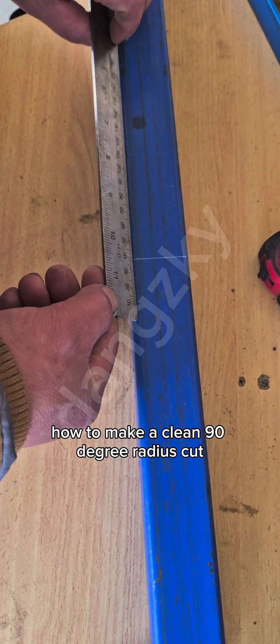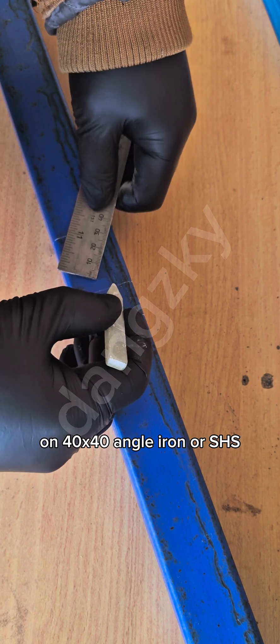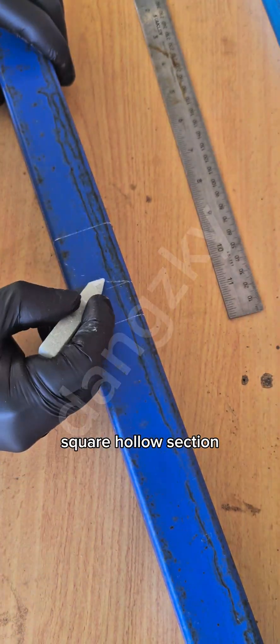How to make a clean 90-degree radius cut on 40 by 40 angle iron or SHS square hollow section.